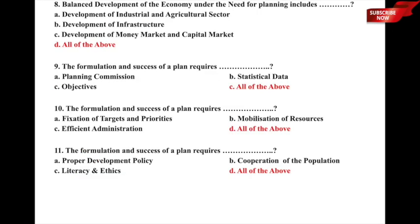Question 8: Balanced development of the economy under the need for planning includes what? The options are a) development of industrial and agricultural sector, b) development of infrastructure, c) development of money markets and capital markets, or d) all of the above. The correct answer is option d) all of the above.